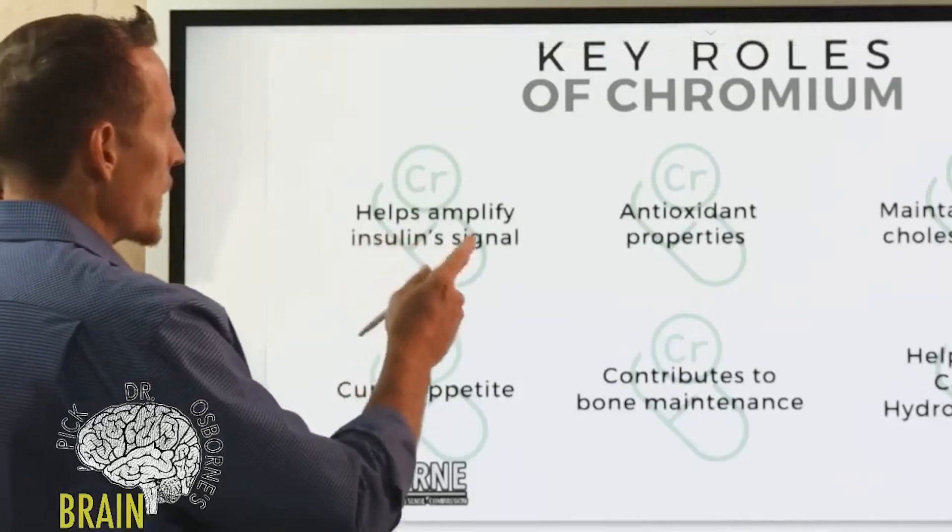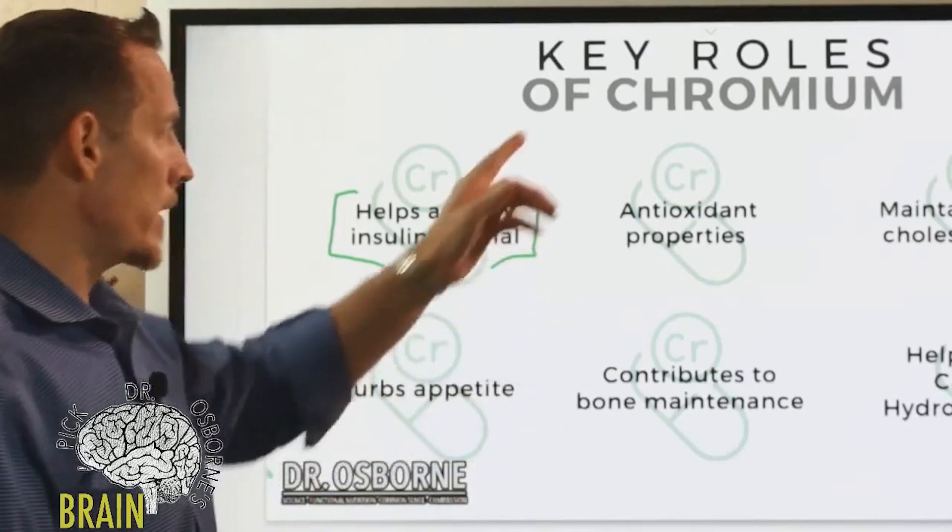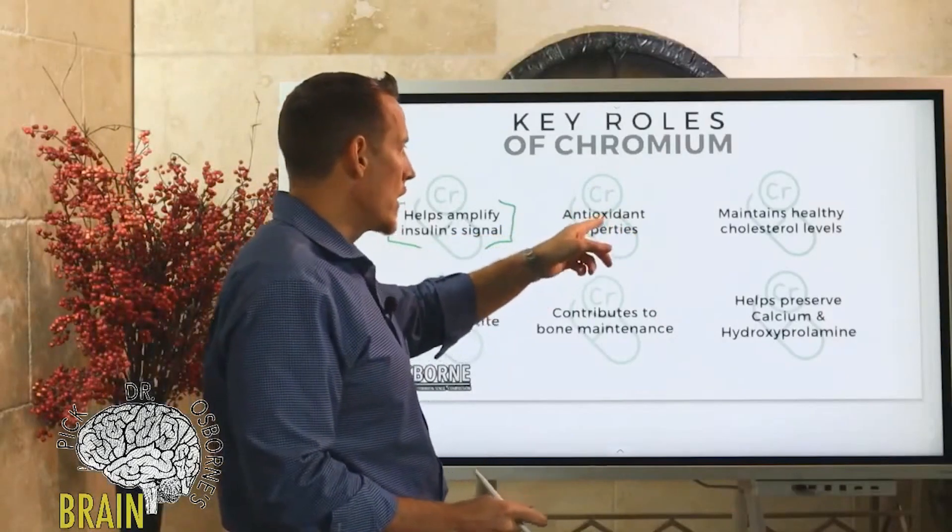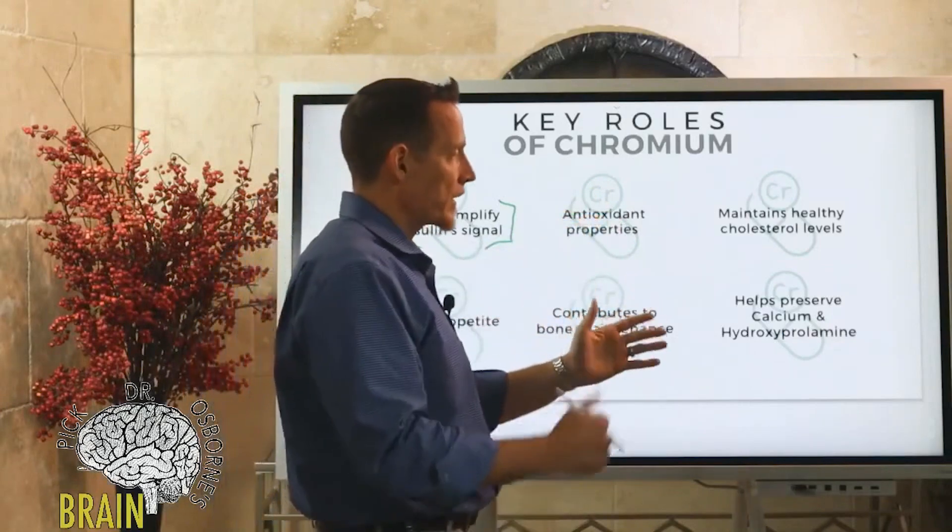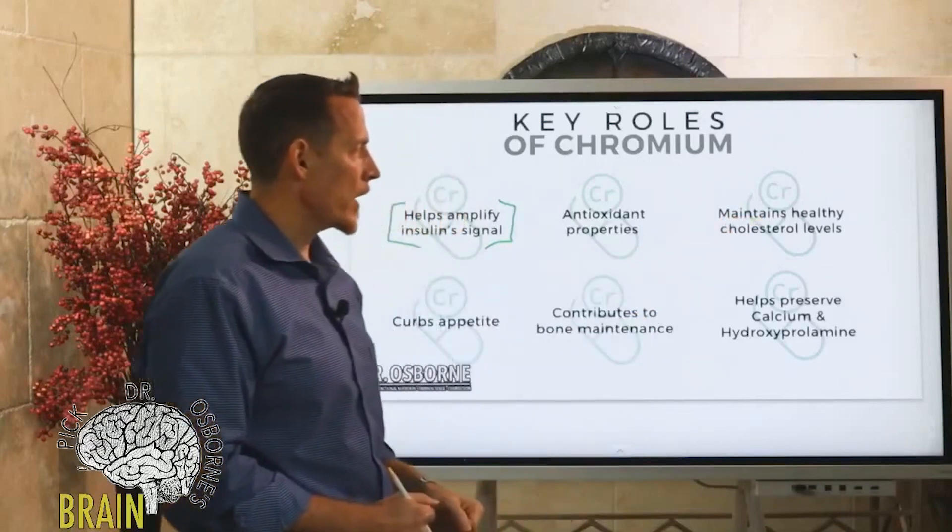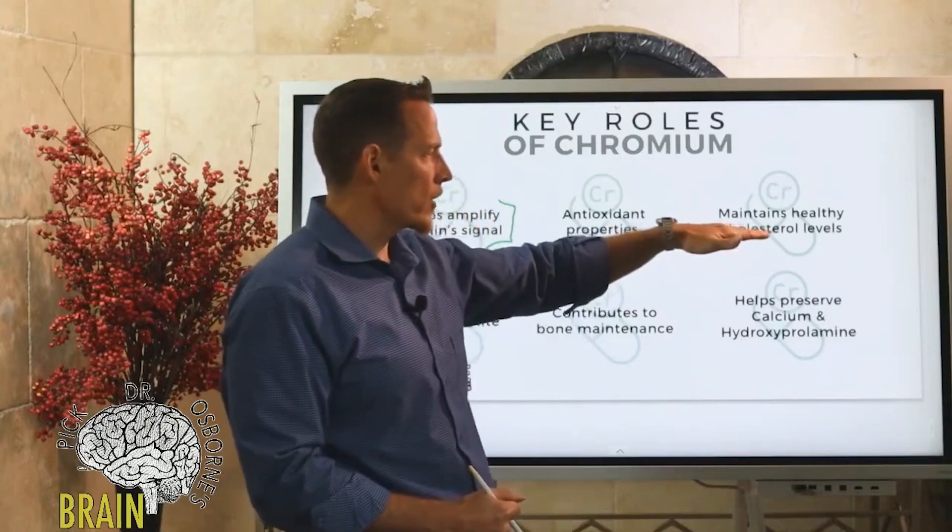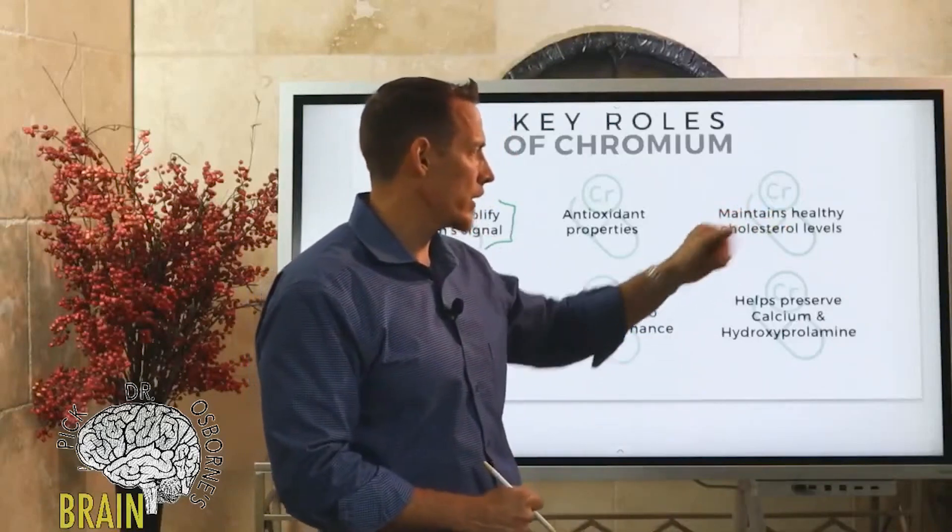One of the most important is that it helps to regulate how insulin interacts with your cells, and we're going to talk about that in just a minute. Chromium also has antioxidant properties which can protect you from a number of the things that people do over the holiday season, predominantly overeating. It also helps maintain healthy cholesterol. If you're confused at all about cholesterol, I would encourage you to go back and watch some of my videos on cholesterol because when I say maintaining healthy cholesterol levels, it's not what most people think.